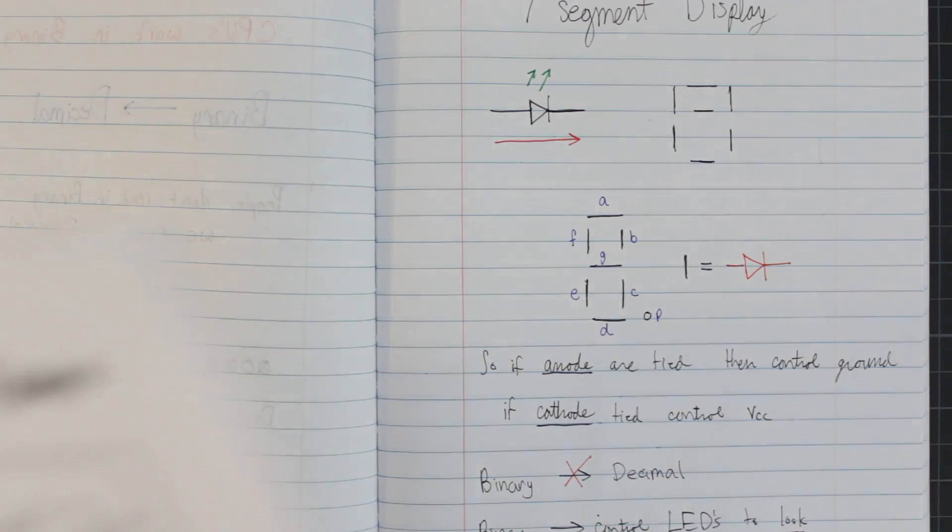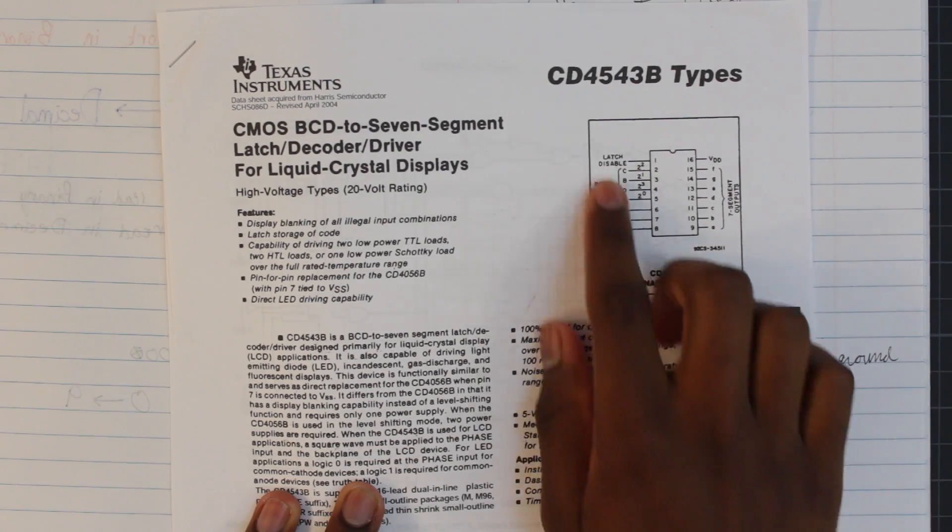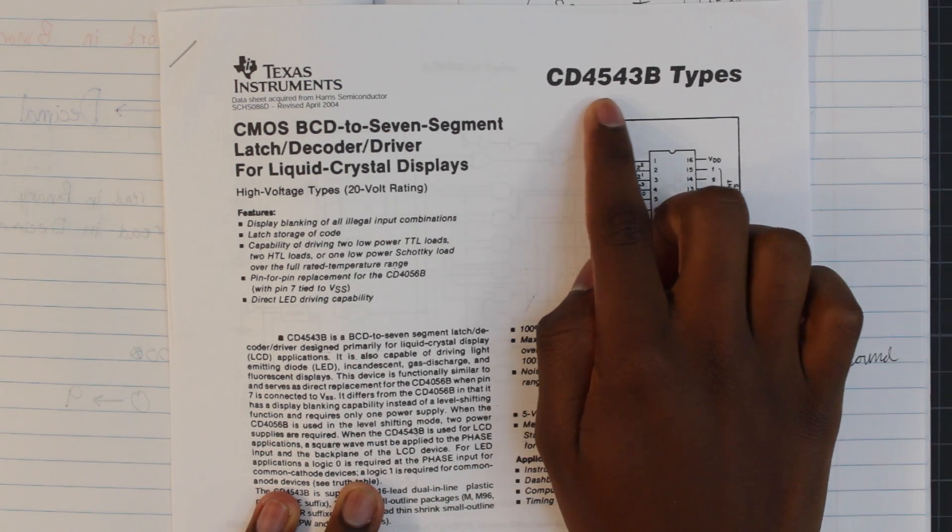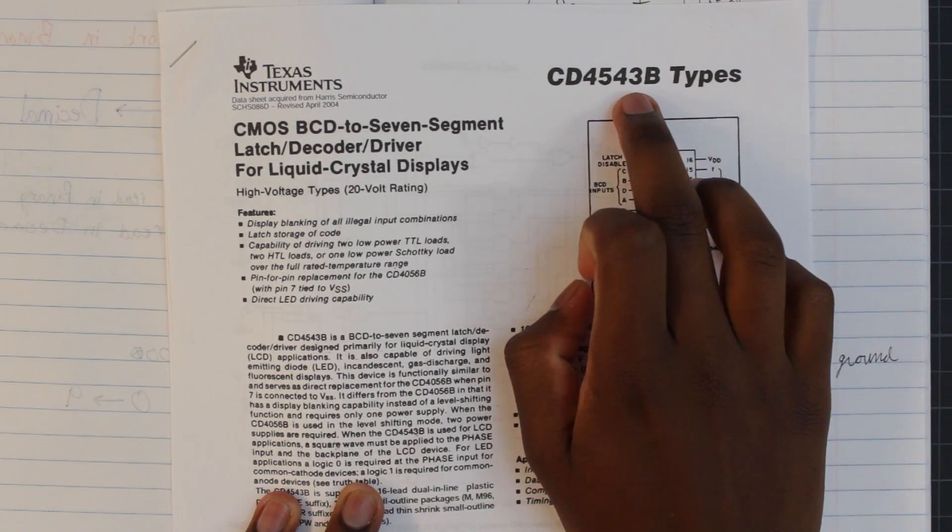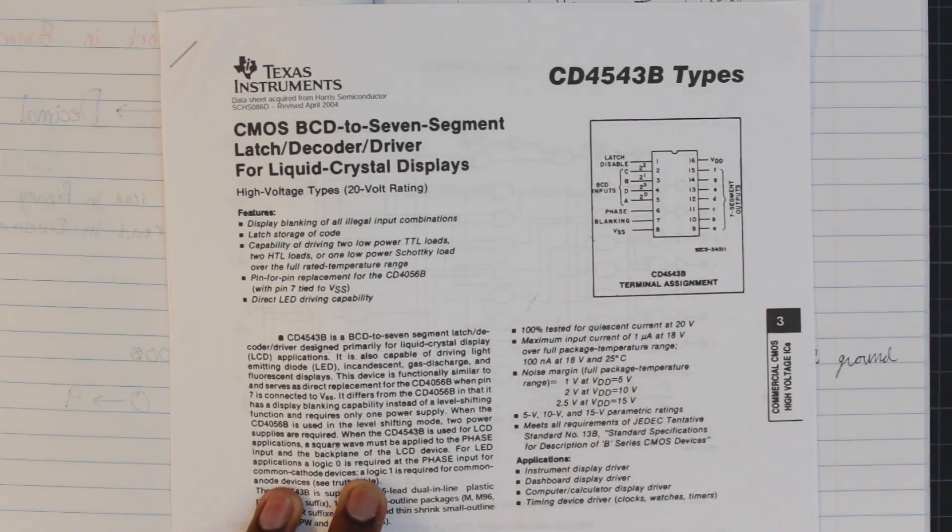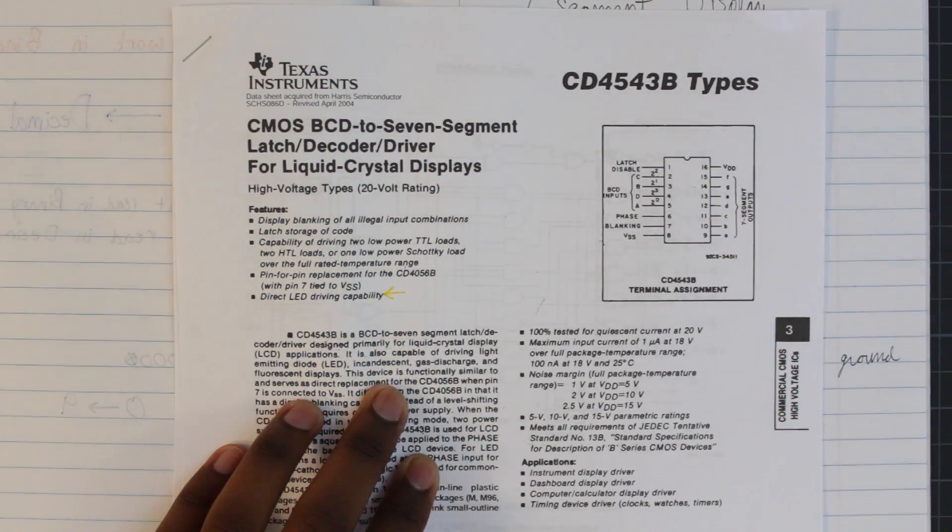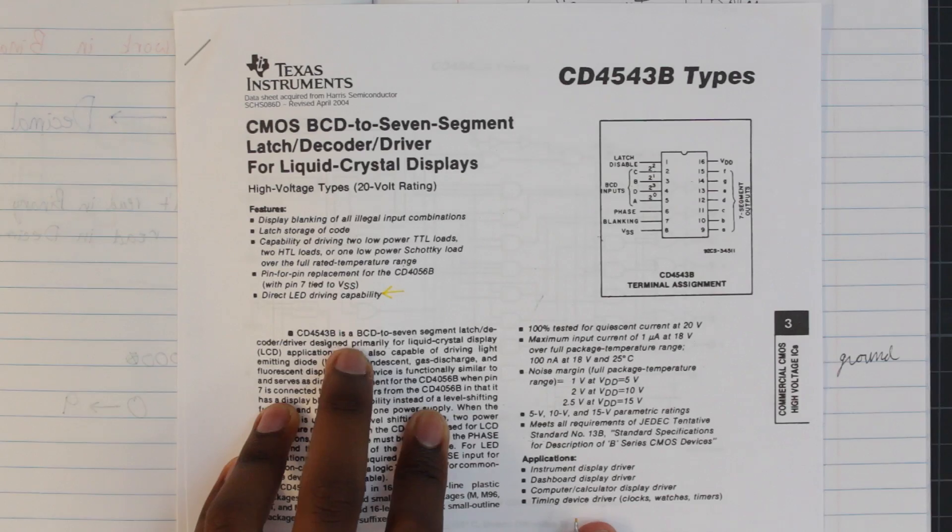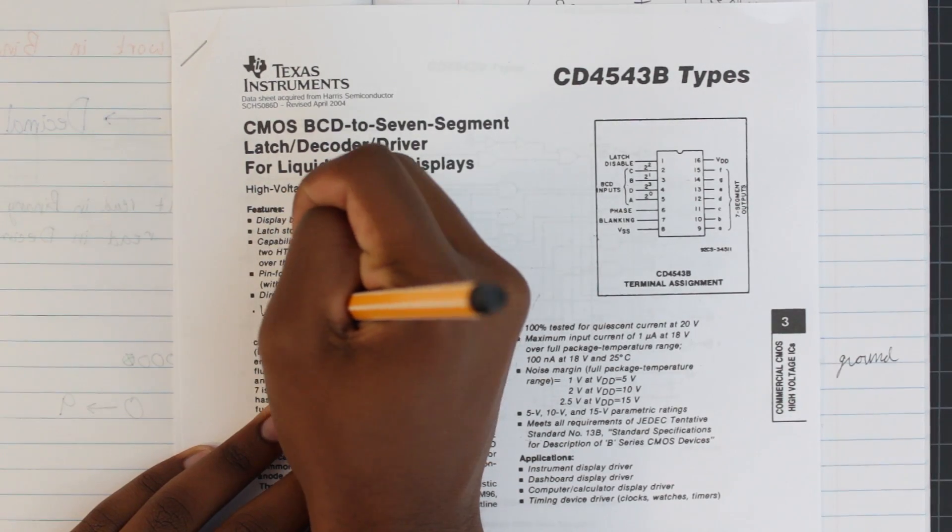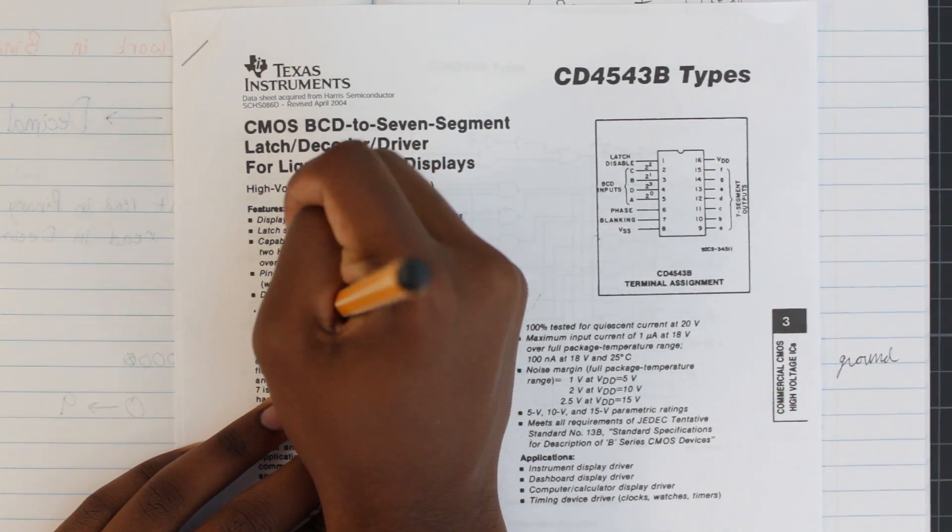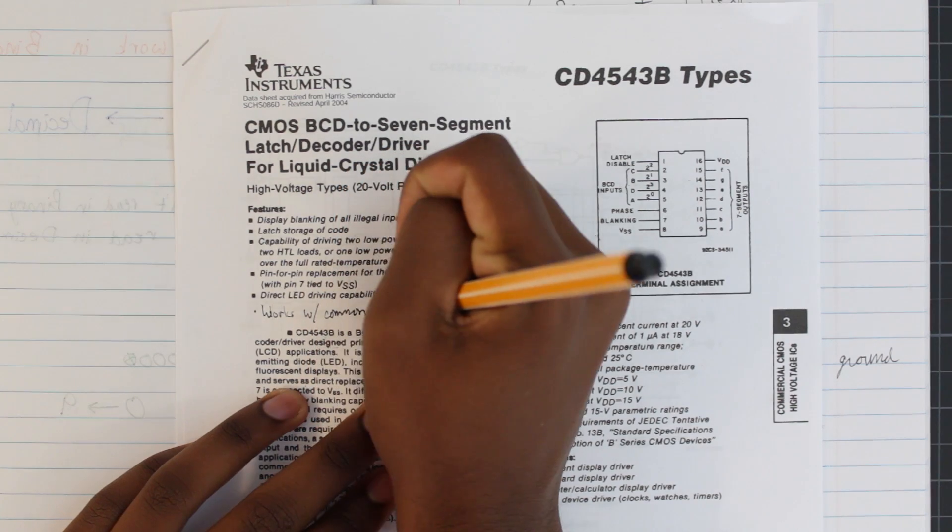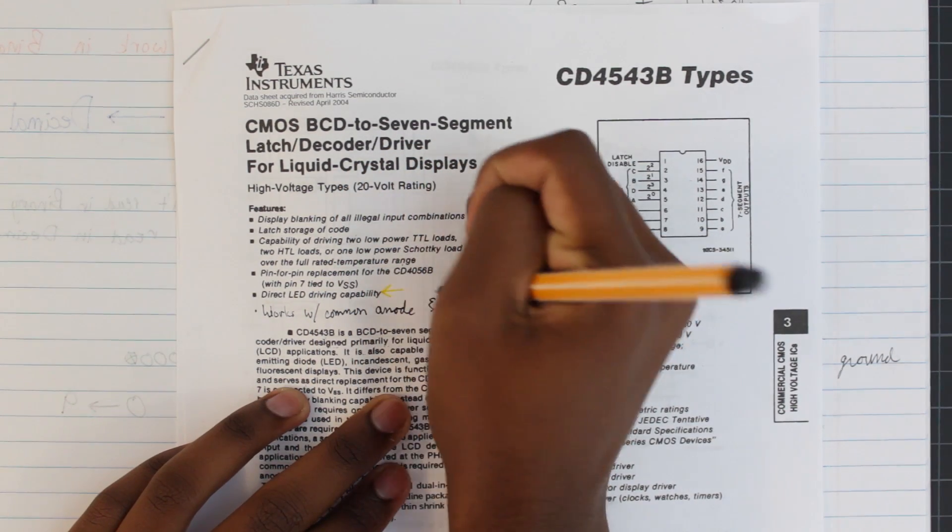As usual, there exist chips that do this conversion for us. The one I have is the CD4543B. I do not recommend this chip, and we'll get into why that is later. The reason I chose this chip, though, was the direct LED driving capability, but that's pretty standard. This chip works with both common anode and common cathode displays, which is the real reason I chose it.